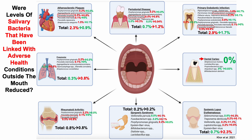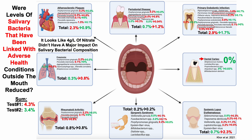The better strategy seems to be targeting those two bacteria that keep appearing across both oral and systemic adverse health conditions. Taking the sum of bacteria linked with adverse conditions outside the mouth: 4.3% for test one, with some improvement to 3.4% for test two. But these are very small changes. It looks like four grams per liter of potassium nitrate in my prebiotic mouthwash didn't have a major impact on salivary bacterial composition. So rather than removing it, I'm going to cut it in half — to two grams per liter — as a first step, then test again.